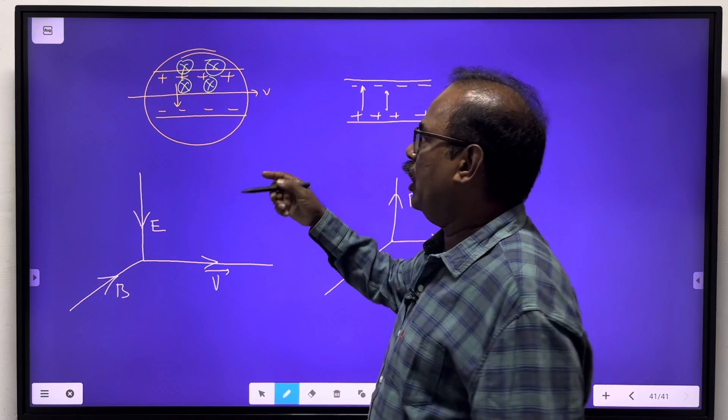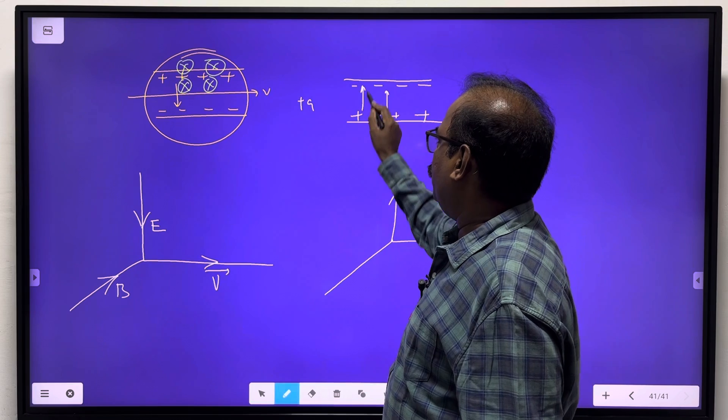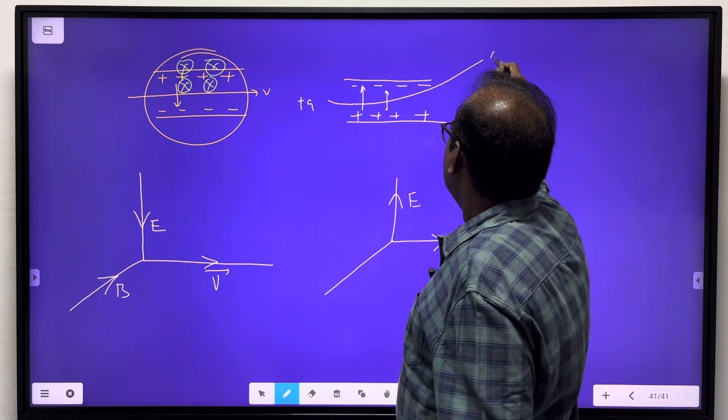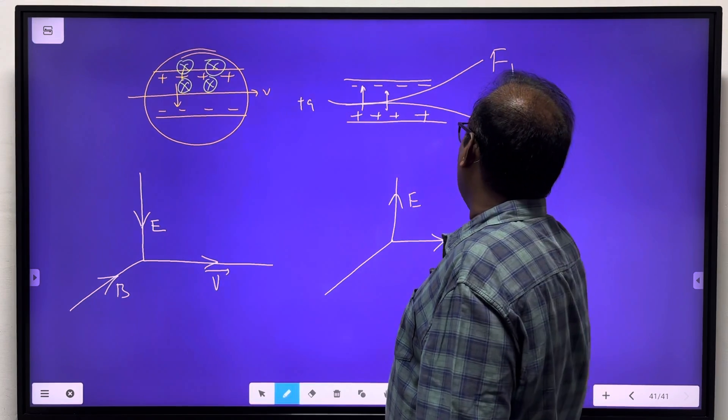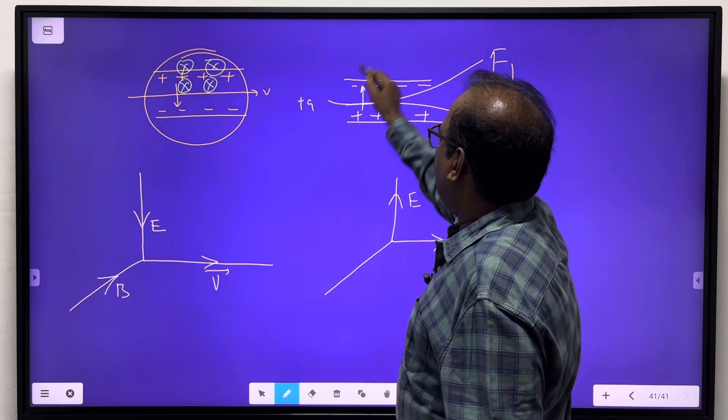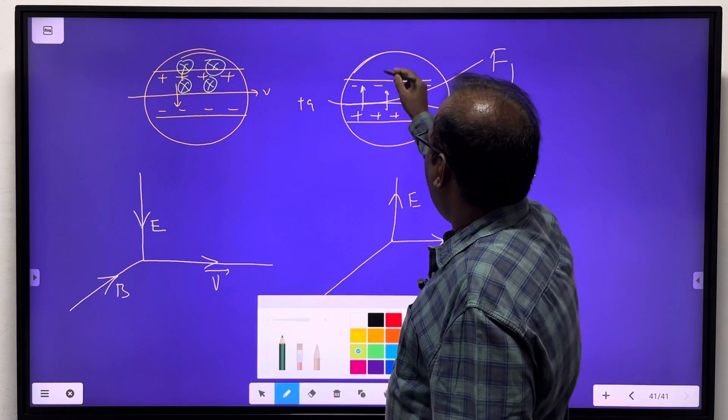The charged particle q is here. Positive repel, negative attraction. F1 is upwards. F2 is downwards. That is why, with the magnetic field like this, it should be coming away.